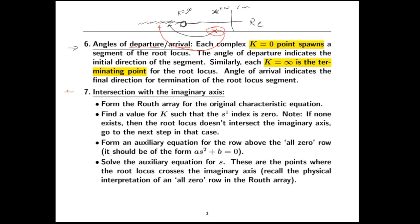Another piece of information is the intersection of the root locus with the imaginary axis. This doesn't always happen, but it does happen if you have a branch or branches that cross the imaginary axis into the right half plane. Whenever that happens there's an intersection with the imaginary axis, which is a stability question. To find the value of k and the actual crossing point, we do a Routh array. Specifically, we find values of k that lead to an auxiliary equation, because when we have an auxiliary equation we have the possibility of poles on the imaginary axis.